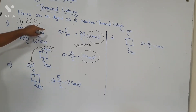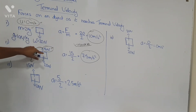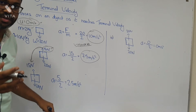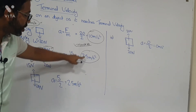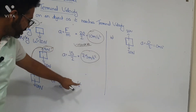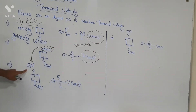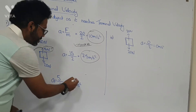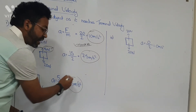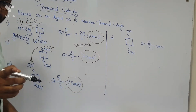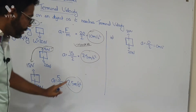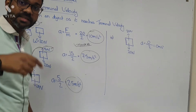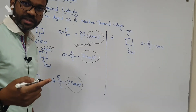Starting from when the resultant force was 20 Newtons — very large because there was no air resistance — then the air resistance started acting as velocity increased. As the velocity increased further the air resistance also increased, and now the acceleration is only 2.5 m/s², but it is still accelerating.